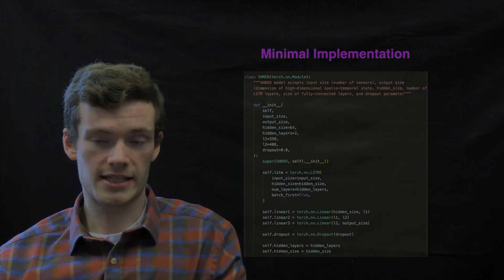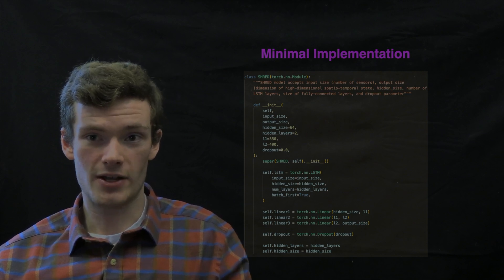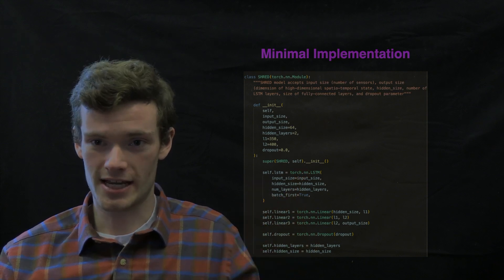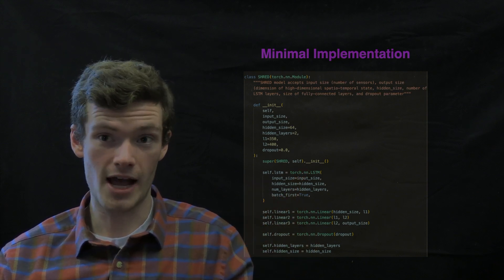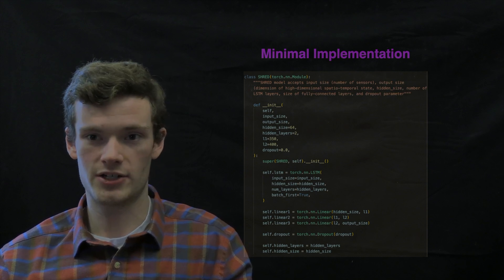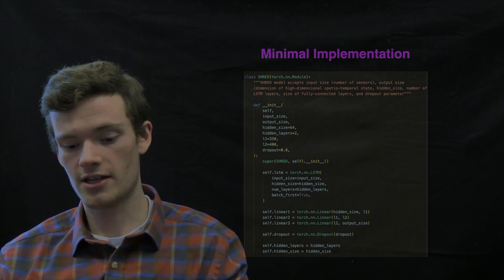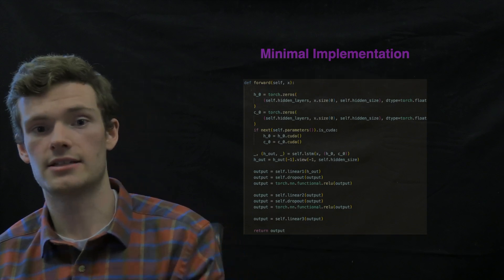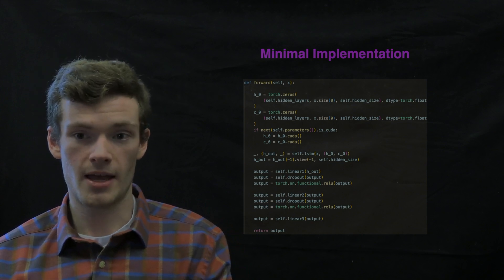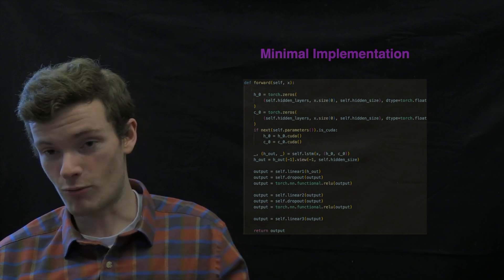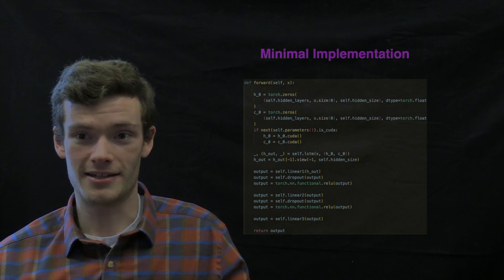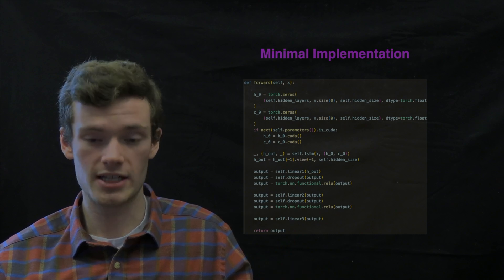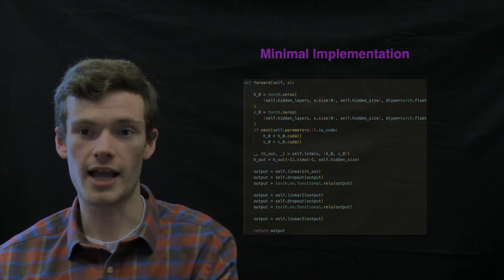Before we look at some specific examples of that, I want to chat just a little bit longer about how simple of a model this is. So this is the instantiation of a SHRED model in PyTorch. It's a minimal implementation. But just the initialization here and the forward function here is enough to get a SHRED model that works in a lot of the cases that we've considered. And that is, in some ways, a remarkable result in that something as simple as the recurrent architecture achieves as good of performance as we'll look at now.